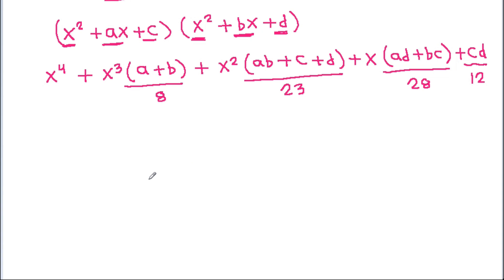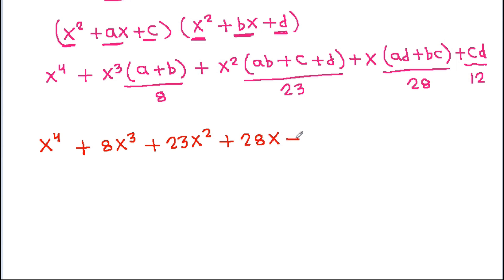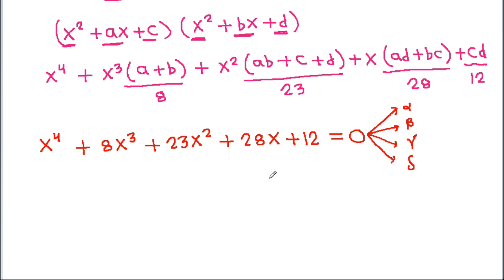So if we take x⁴ + 8x³ + 23x² + 28x + 12 = 0, then note that a, b, c, d are not the roots of this equation. Suppose the roots of this equation are alpha, beta, gamma, and delta. And since the coefficient of every term is positive, all roots will be negative.